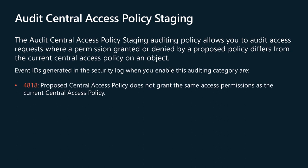The audit central access policy staging auditing policy allows you to audit access requests where a permission granted or denied by a proposed policy differs from the current central access policy on an object. If you configure this policy setting, an audit event is generated each time a user accesses an object and the permission granted by the current central access policy differs from that granted by the proposed policy. Success audits record access attempts when the current central access policy grants access but the proposed policy denies access. Failure audits record access attempts when the current central access policy does not grant access but the proposed policy grants access. Failure audits are also generated when a principal requests the maximum access rights they are allowed and the access rights granted by the current policy differ from those granted by the proposed policy. Items written to the security event log when this policy is enabled are listed in the documentation and on the screen.